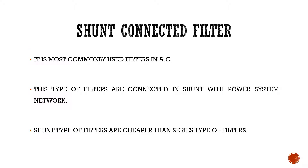Shunt connected filters are one of the most common types of filters used in the AC transmission system. The main advantage of shunt connected filter is that it is capable of compensating higher order harmonics and it is much cheaper compared to that of series type of filters.